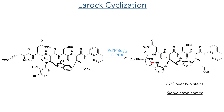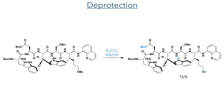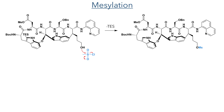With both macrocycles now formed, they entered the endgame of the synthesis. The compound was first reacted with potassium carbonate in methanol, which hydrolyzed the indole acetate and pendant benzoate and produced a methyl ester on the north-western fragment. The molecule was then reacted with mesyl chloride, which mesylated the pendant alcohol and also cleaved the TES group on the second indole ring.